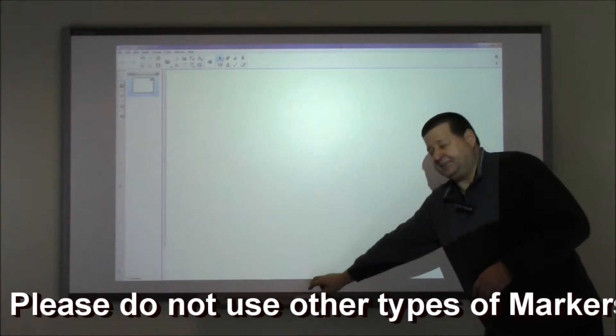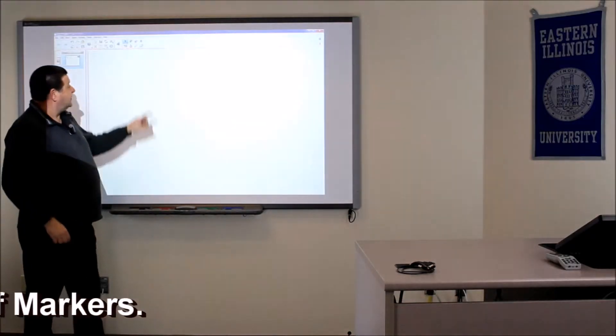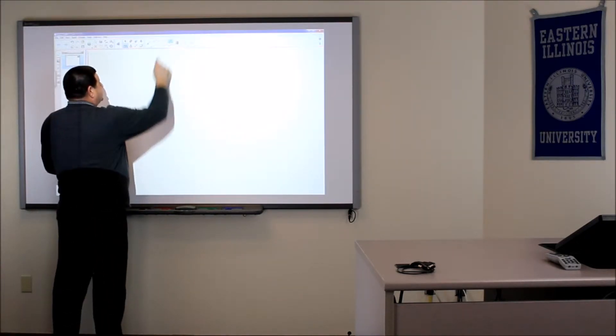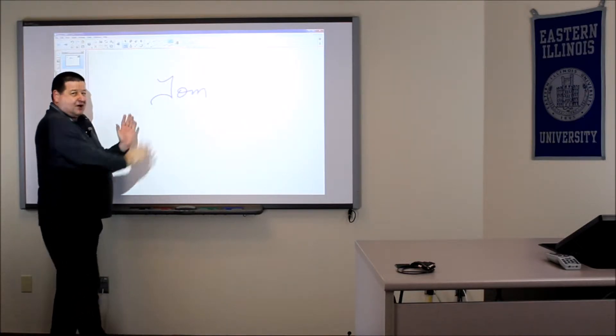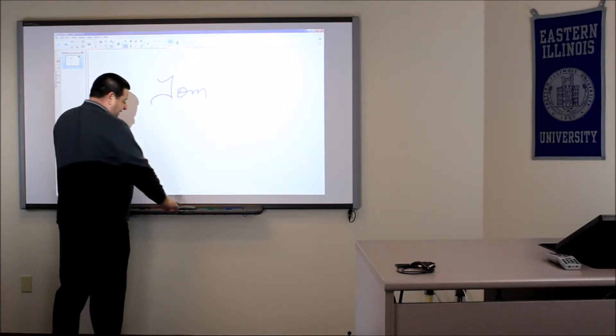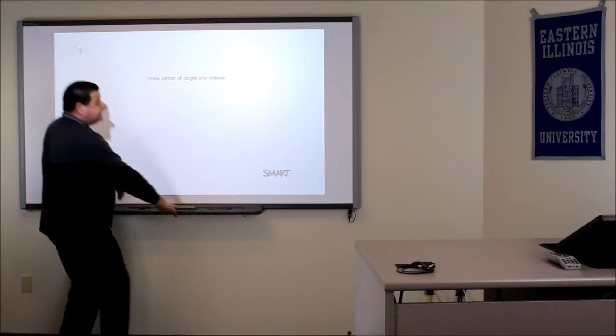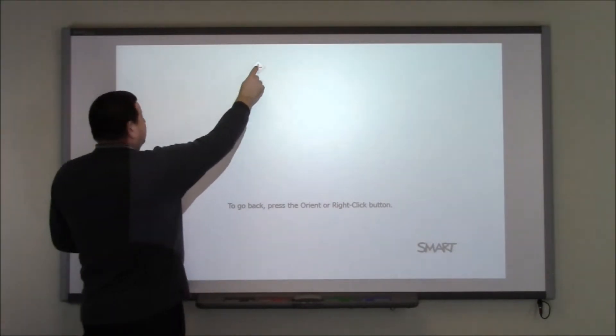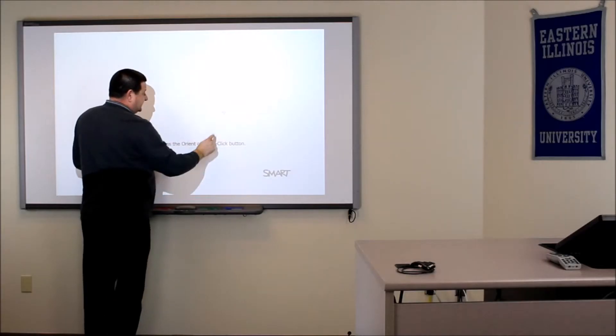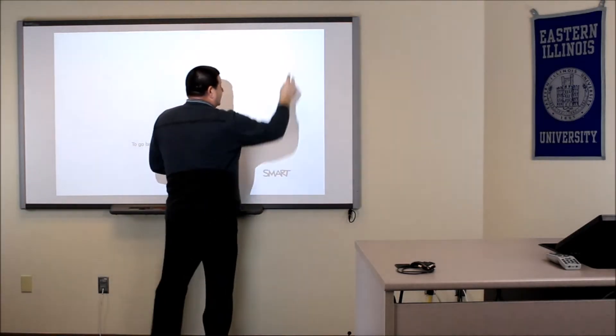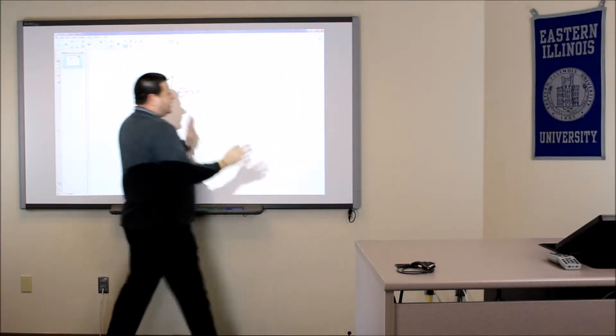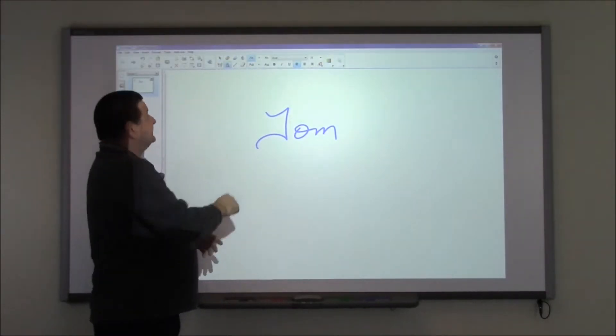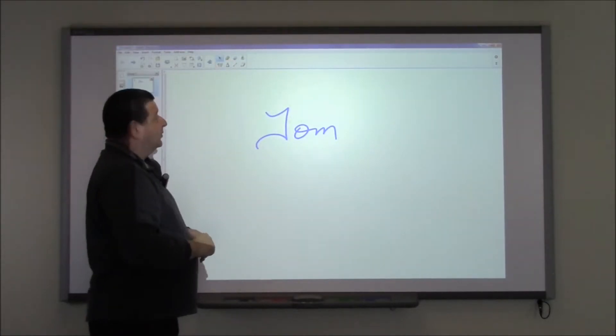One quick tip: we have a calibration feature. You can use your finger instead of the pens. If you notice the pen's not following your finger correctly when writing, you can calibrate it by holding down these two buttons on the smart board's keyboard. This will calibrate it so that when you place your finger on a particular icon, it matches up exactly. That's a quick way to calibrate the smart board.